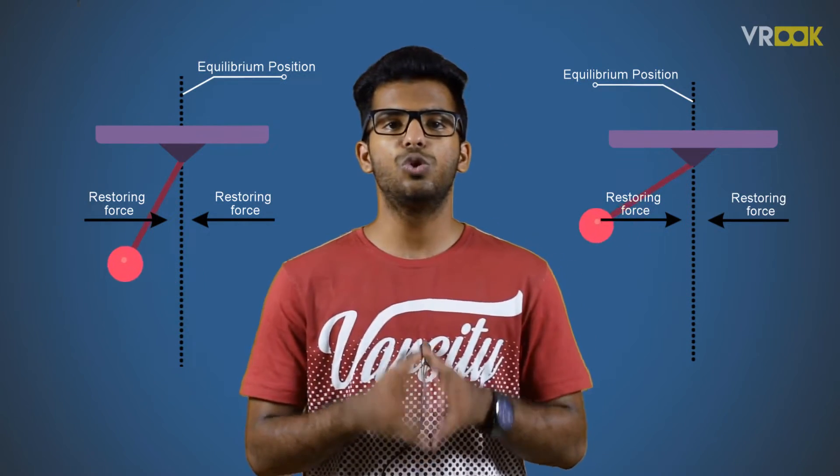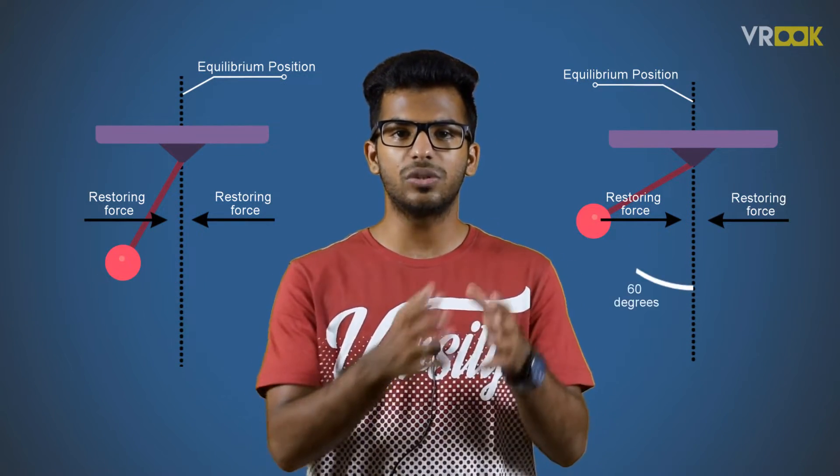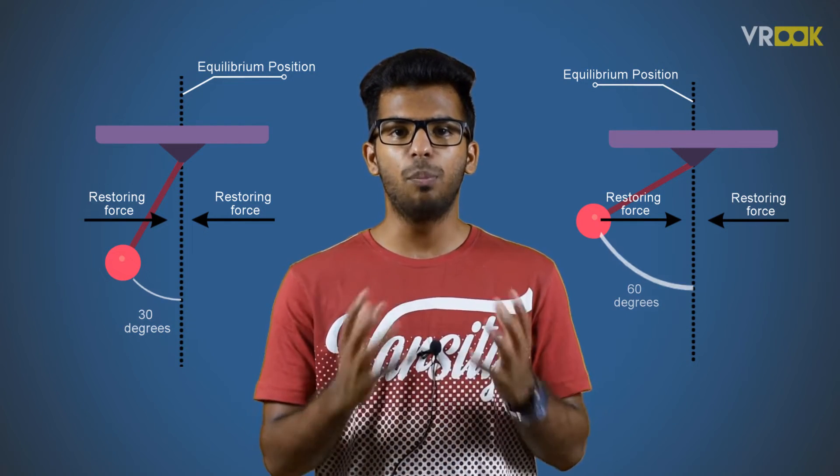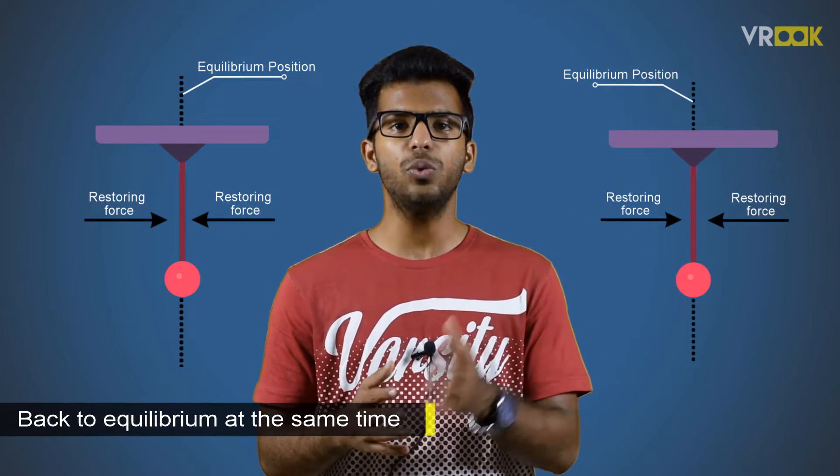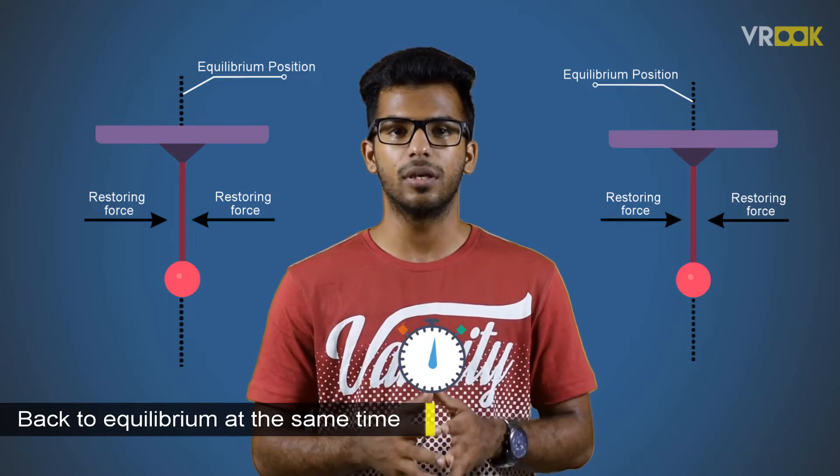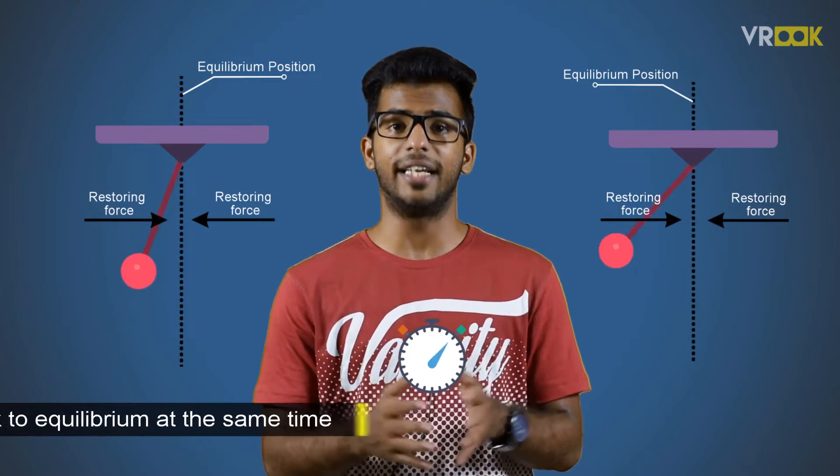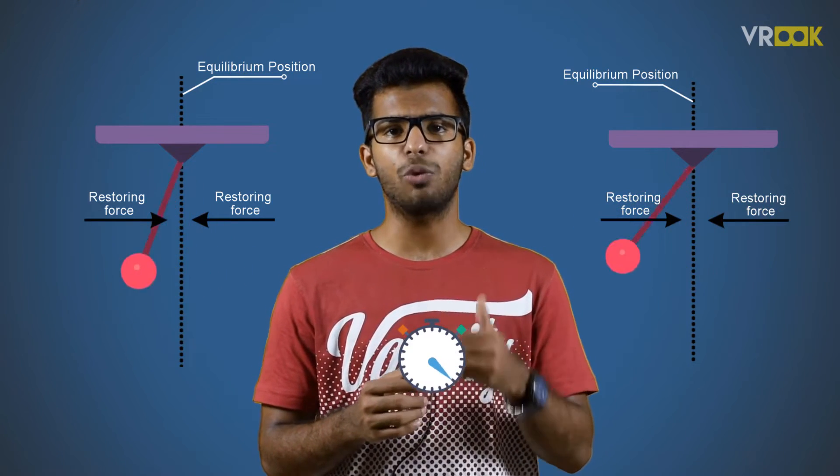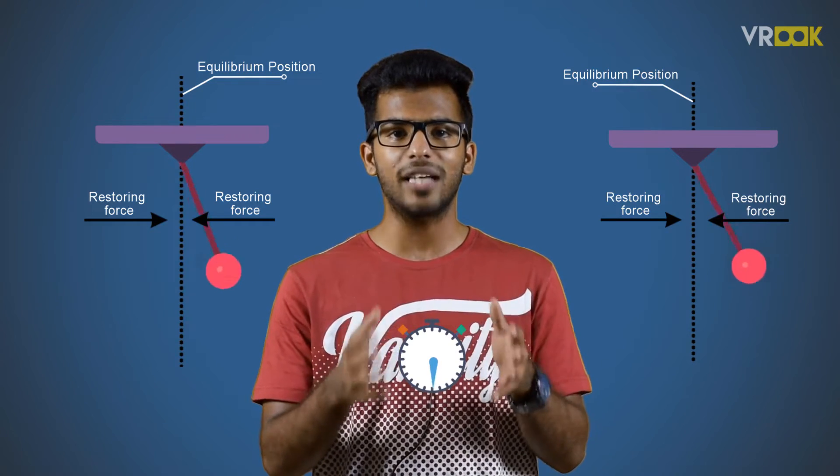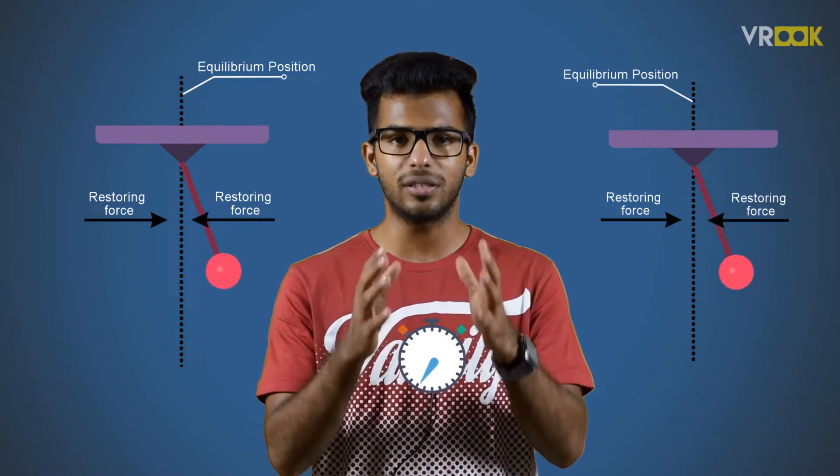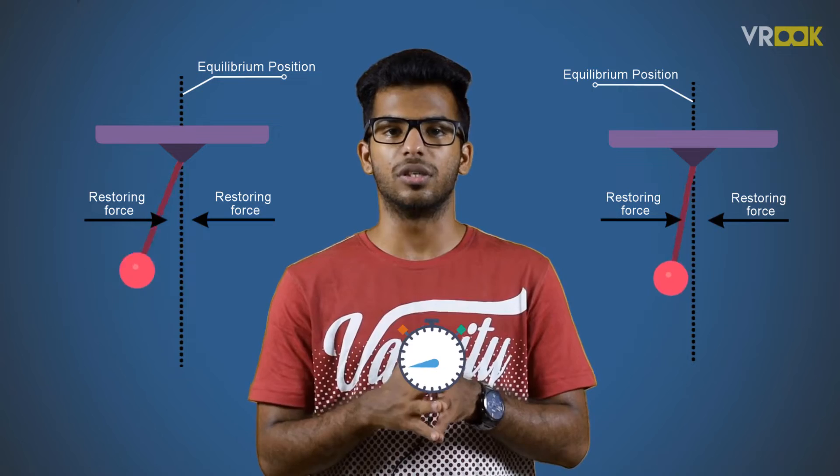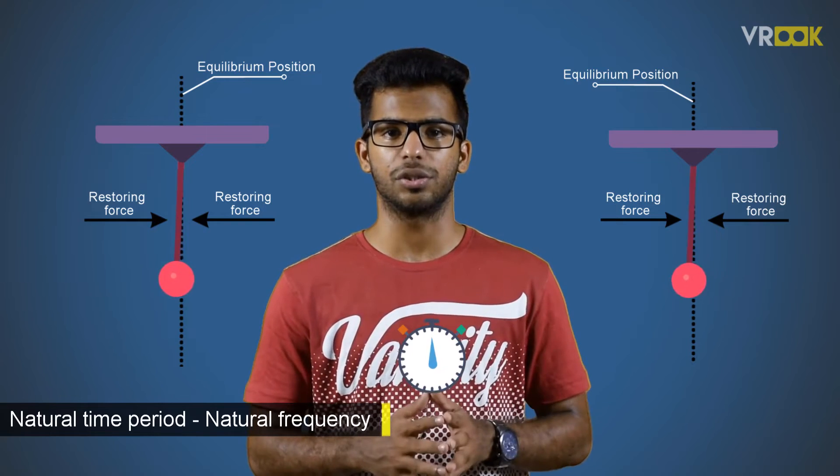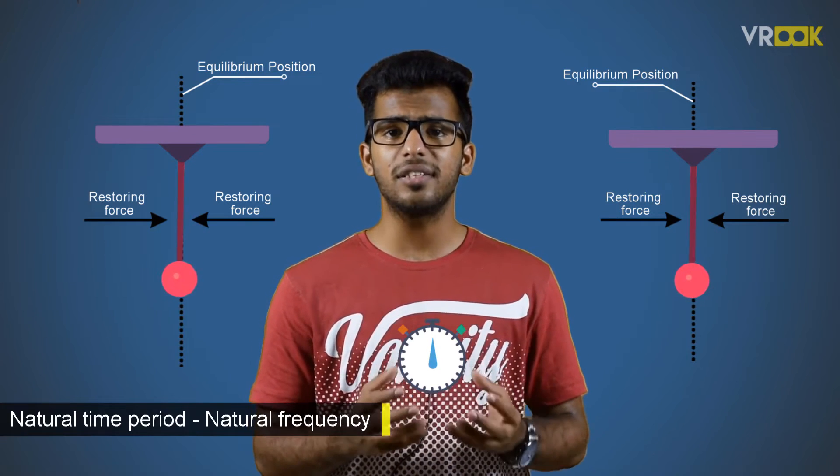Consider this: two similar pendulums, one displaced to 60 degrees and the other to 30 degrees. In both cases, you can see that it returns to equilibrium in the same time period. Then it travels and gets displaced in the other direction, and this gets repeated. But each time, the time required to come back to the equilibrium position from the maximum displacement position is the same. As this time duration is almost the same for all displacements, there is a natural time period for every oscillation. So, as there is a natural time period, we should have a natural frequency.